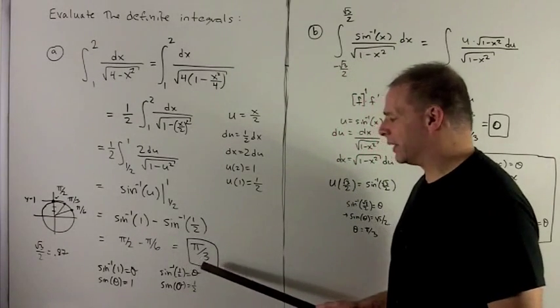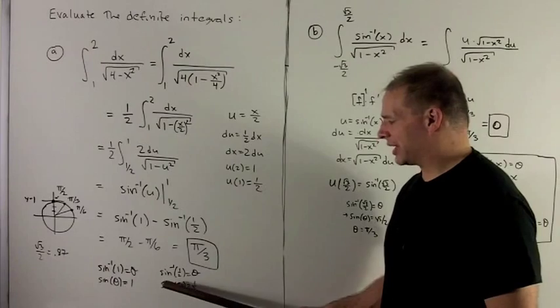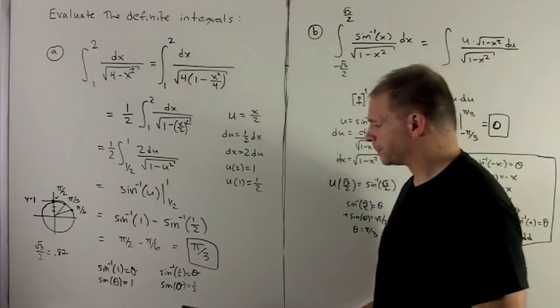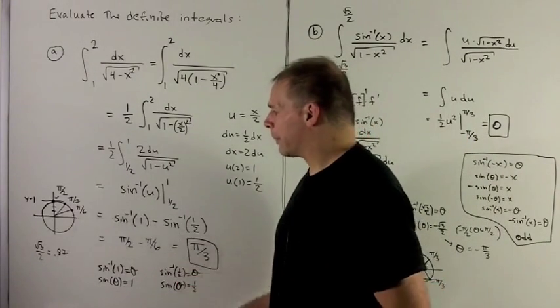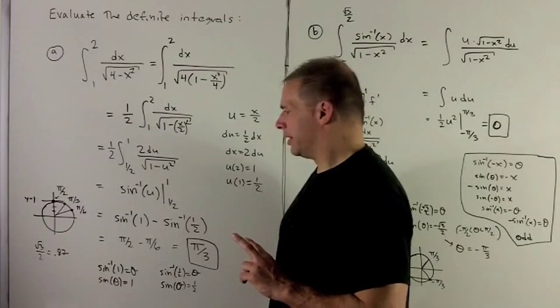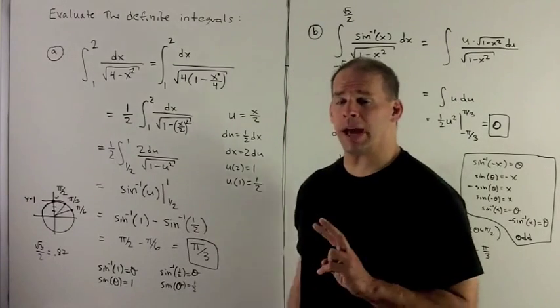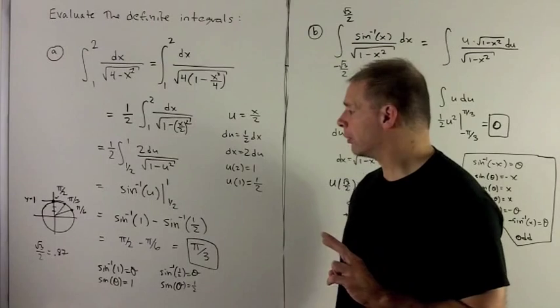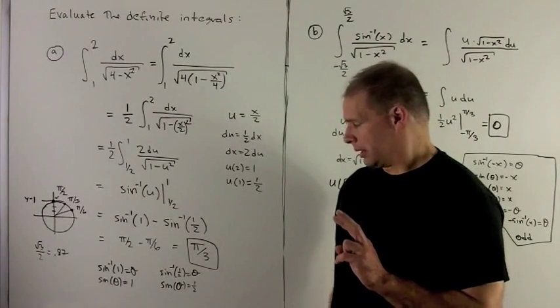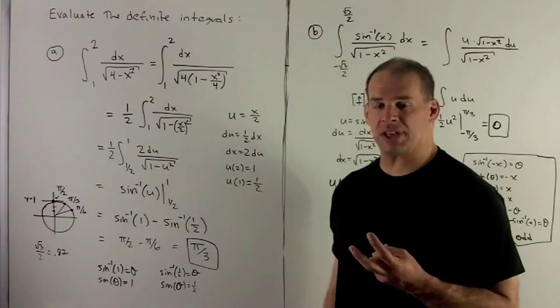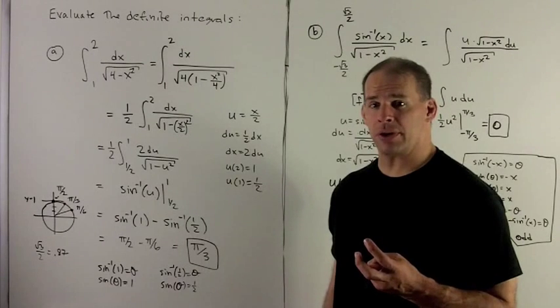For sine inverse of a half equal to theta, that's the same as saying sine of theta equals a half. Remember, we have two possibilities here. This is going to be either pi thirds or pi sixth. We notice that the sines that go pi thirds and pi sixth are either a half or square root of 3 over 2.